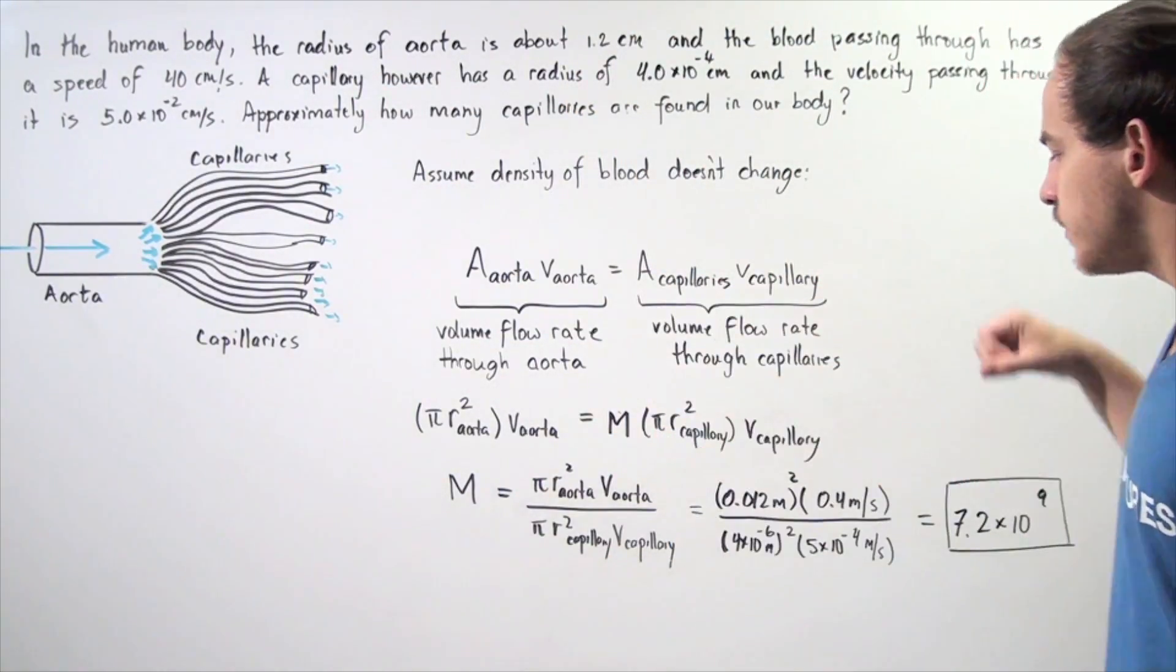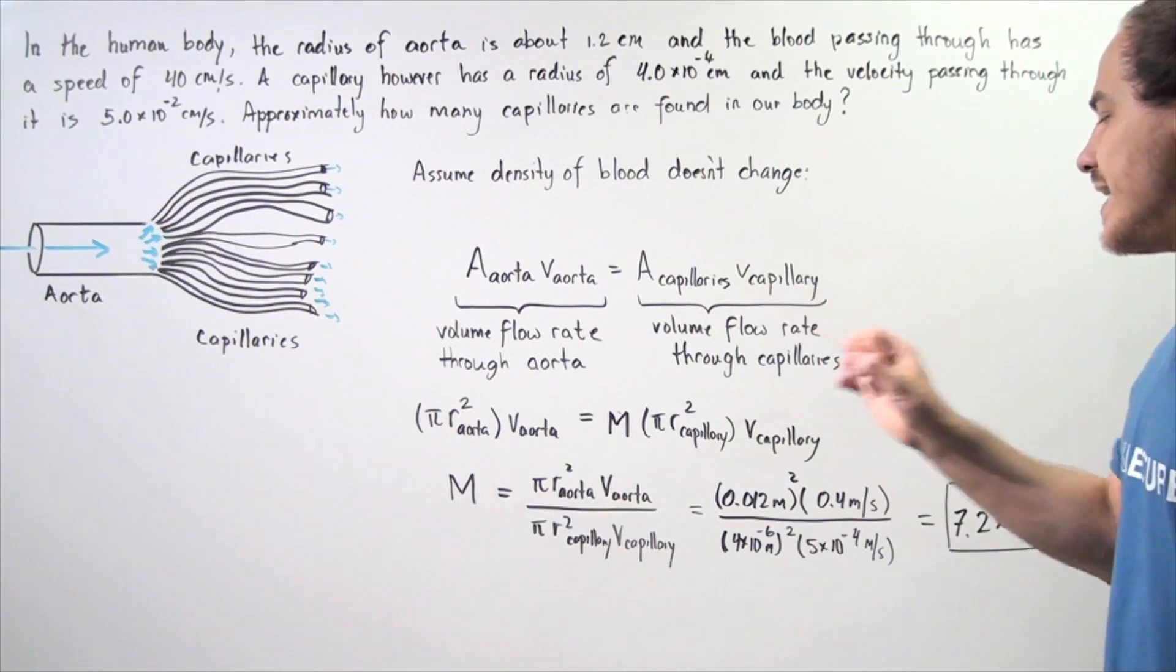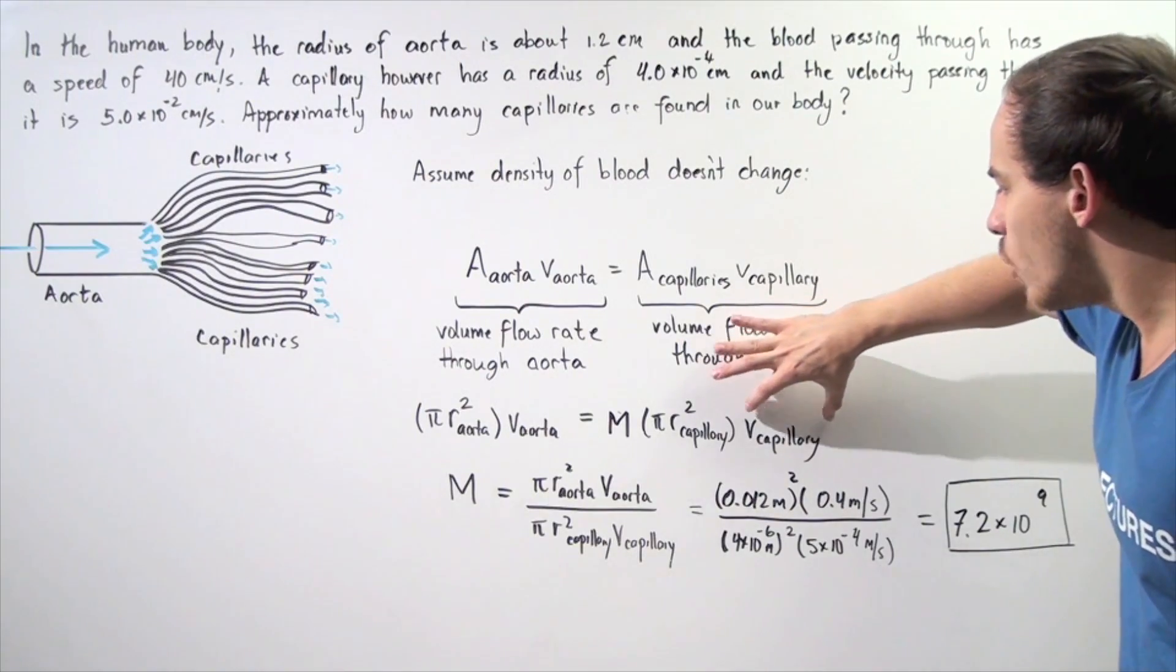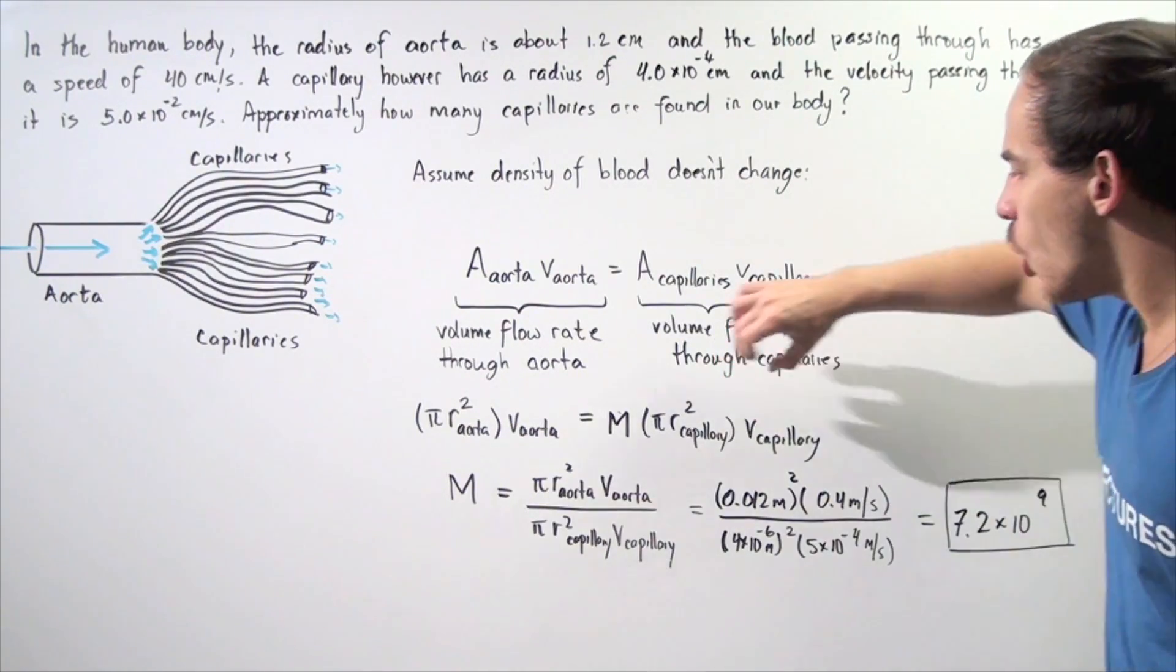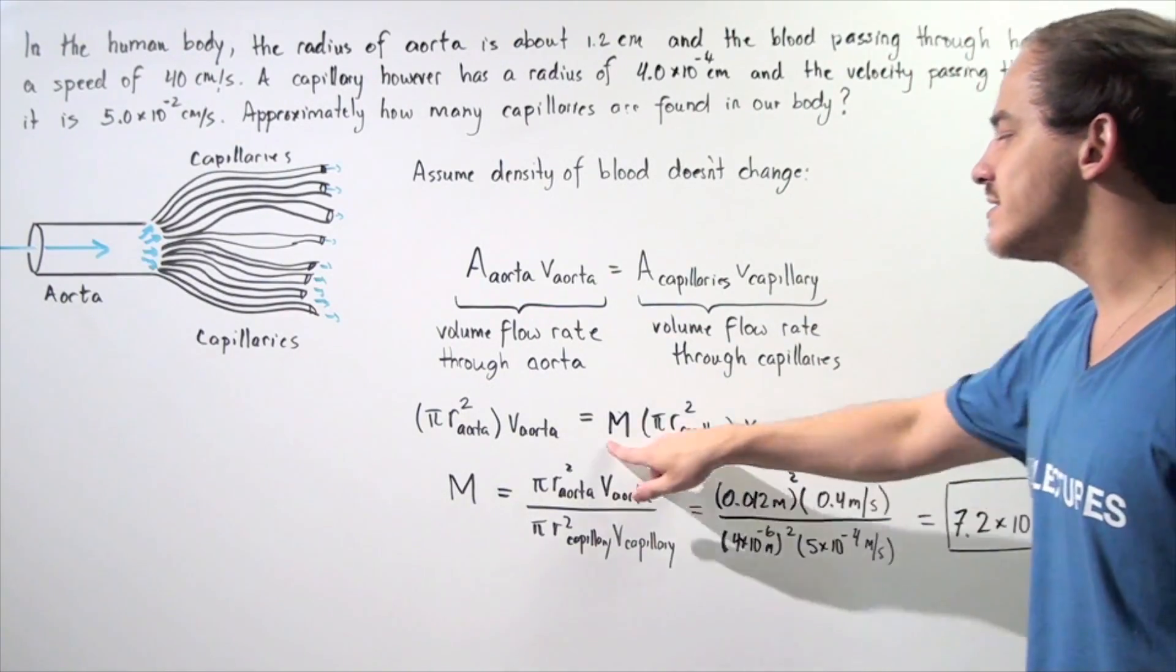We multiply this by the velocity of the blood through a capillary. We know what this quantity is, we know what this quantity is, and these two quantities. So that means we can solve for M.